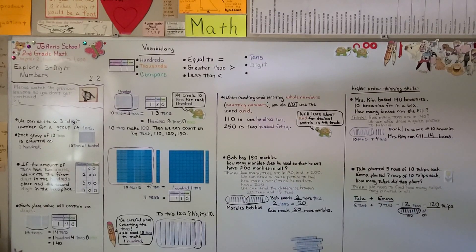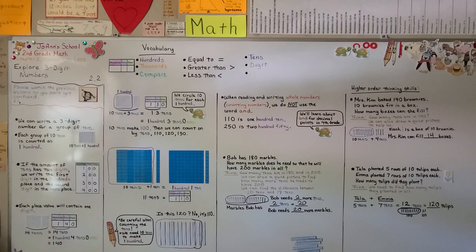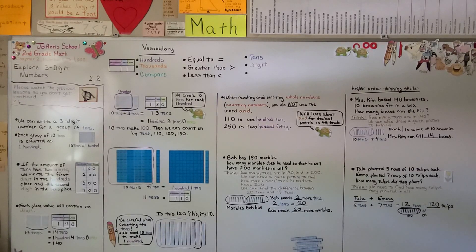Remember to be very careful when you're counting the tens. Don't make a mistake and circle the wrong number — we need 10 tens to make each 100. Our next lesson, 2.3, we're going to model 3-digit numbers as hundreds, tens, and ones. I hope I'll see you there, and I hope you're doing very well.